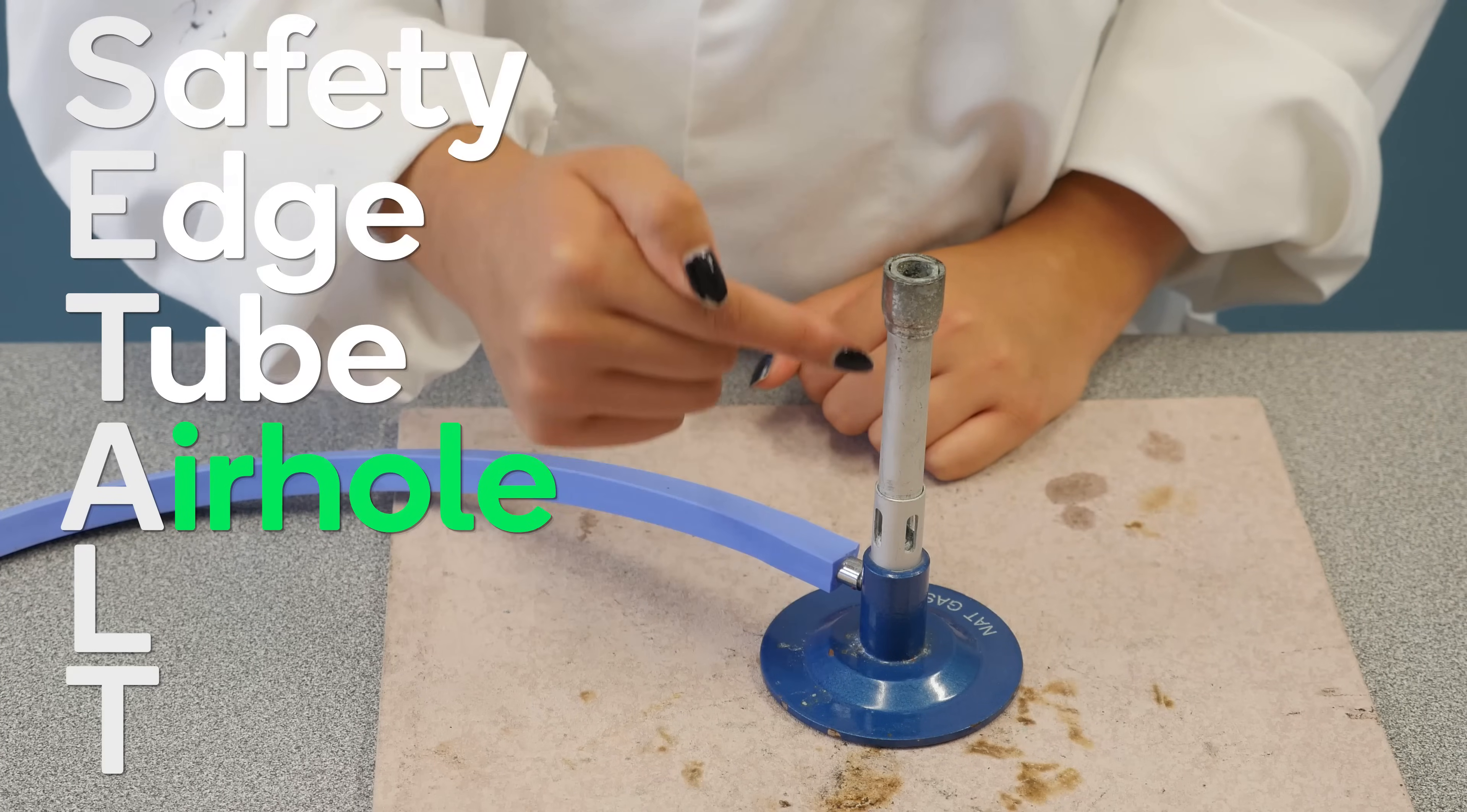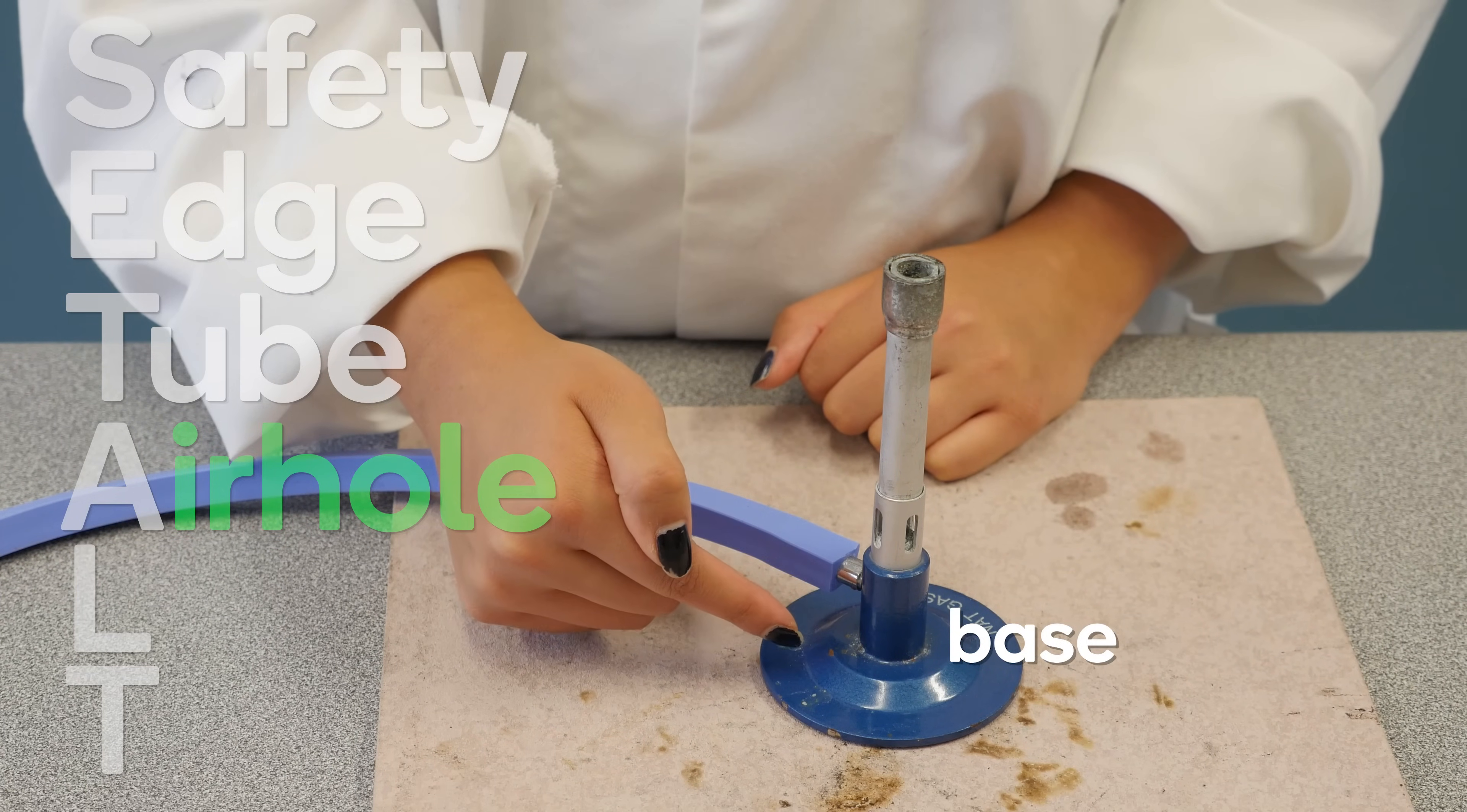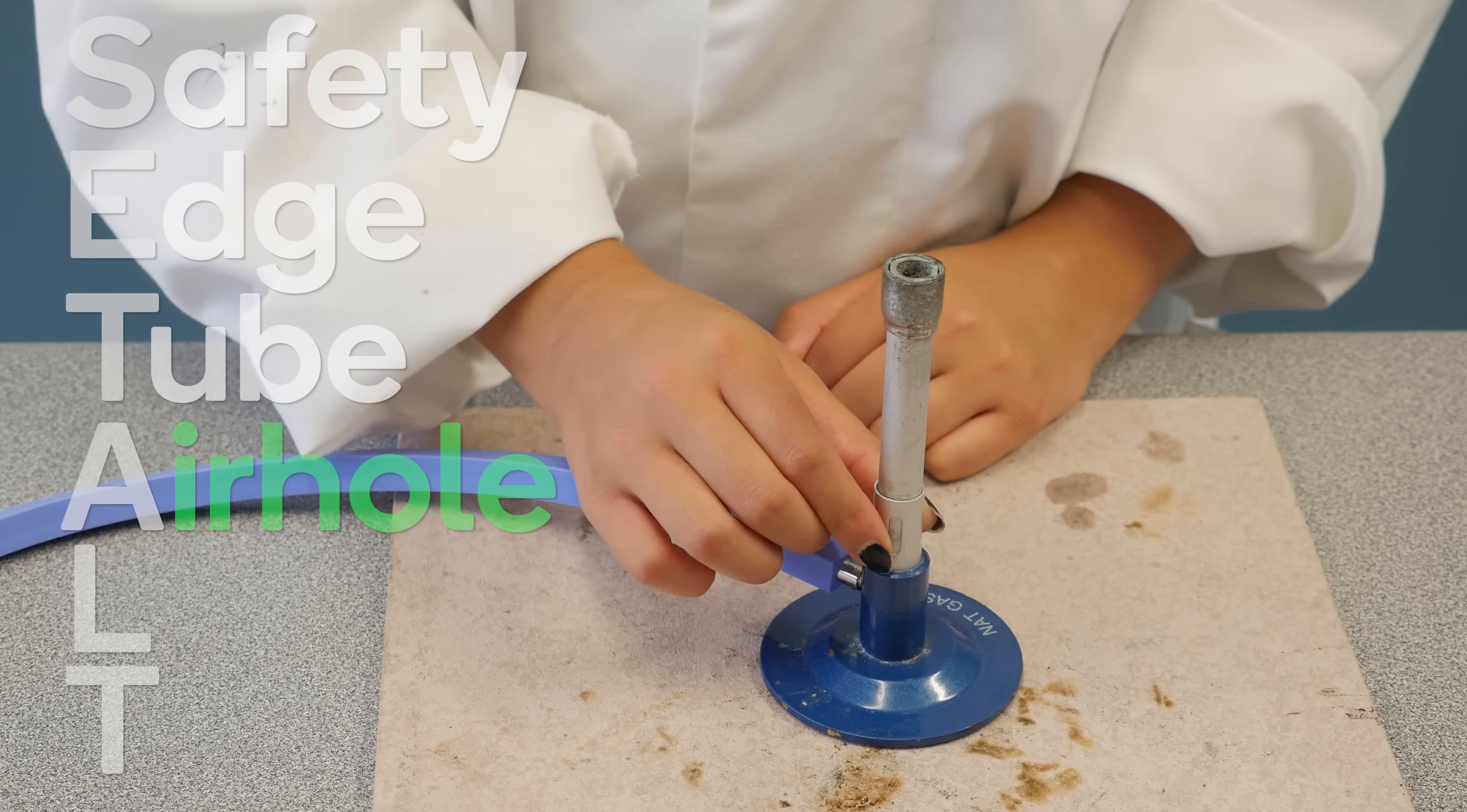A is for air hole. The air hole is located at the bottom of the barrel, near the base. It can be opened or closed by turning a metal ring, called the collar. This controls the amount of air and oxygen that mixes with the gas.